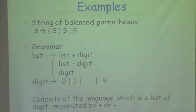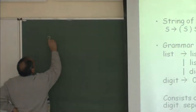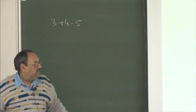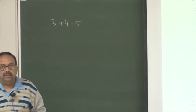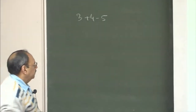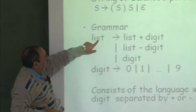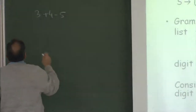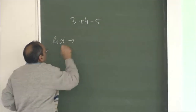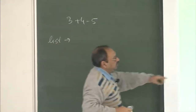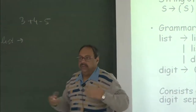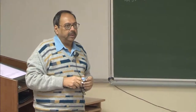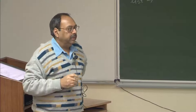Let us look at an example. Suppose I want to check whether this is a valid string in the second language specified by this grammar. One way is if this is my start symbol, can I derive it from the start symbol? Derivation means I am going to say this is a non-terminal which gives me one of these rules, and if I replace it by one of the rules and continuously keep doing so — what I have not said is which rule and which non-terminal to expand — but suppose somehow I am able to pick the right rule.